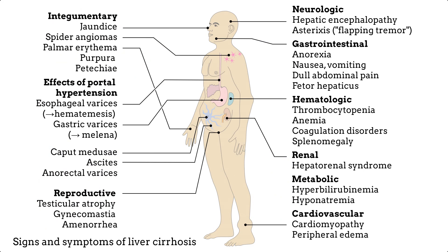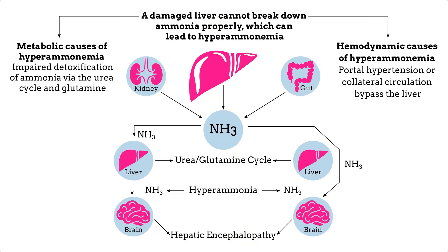Liver cirrhosis causes many symptoms, but the most acute for me is hepatic encephalopathy, also known as liver brain disorder. It's a potentially irreversible brain dysfunction caused by an insufficient detoxification function of the liver. In other words, with liver cirrhosis, the human body becomes increasingly poisoned with ammonia, a highly toxic cell toxin.